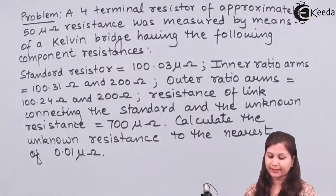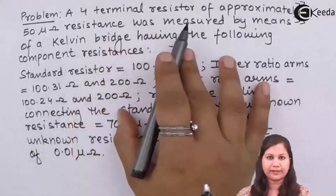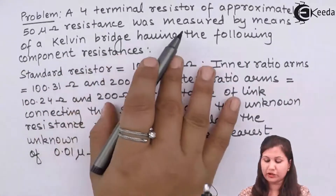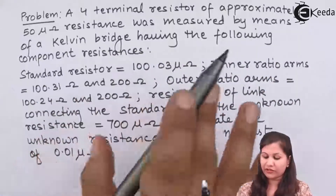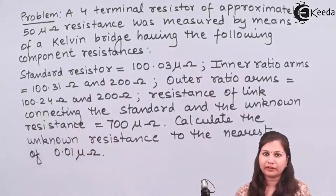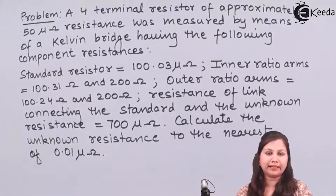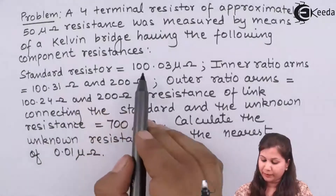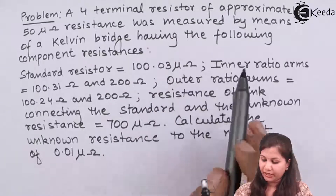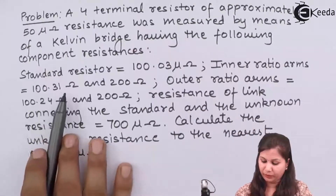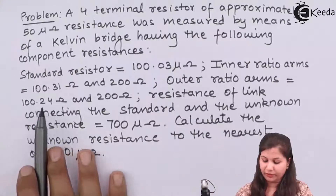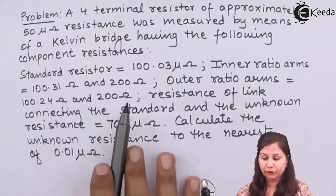Our question is that a four-terminal resistor of approximately 50 micro ohm resistance is measured by using a Kelvin bridge which has the following component resistances. The standard resistor is 100.03 micro ohm. Inner ratio arms are 100.31 ohms and 200 ohms. Outer ratio arms are 100.24 ohms and 200 ohms.